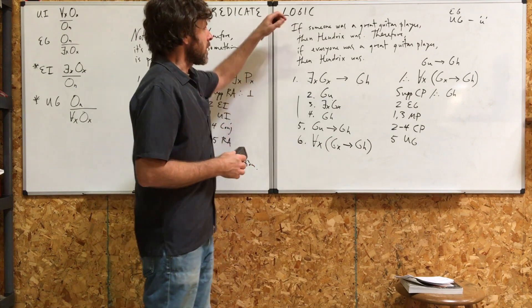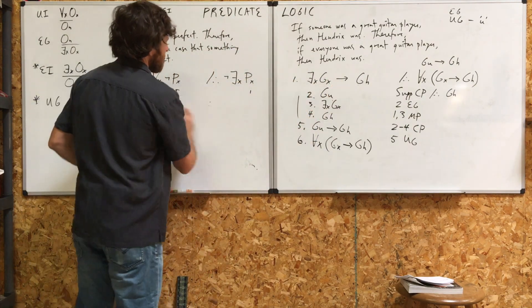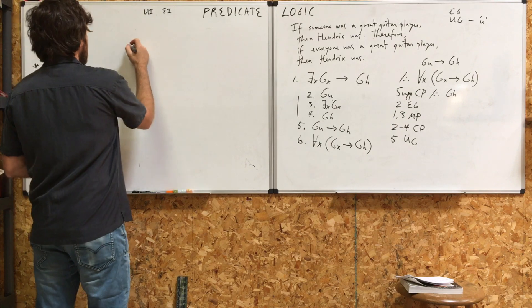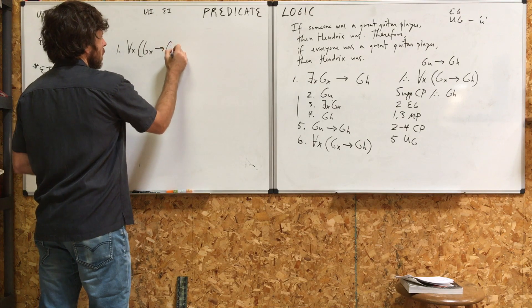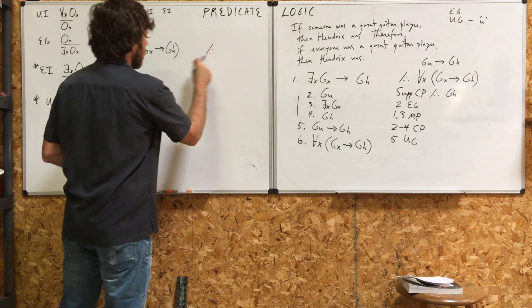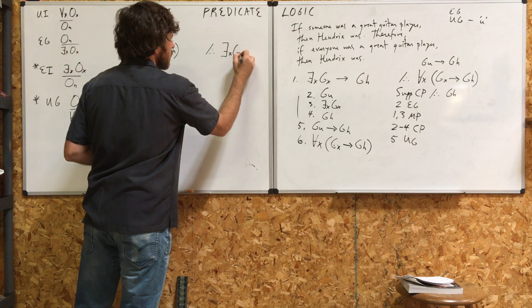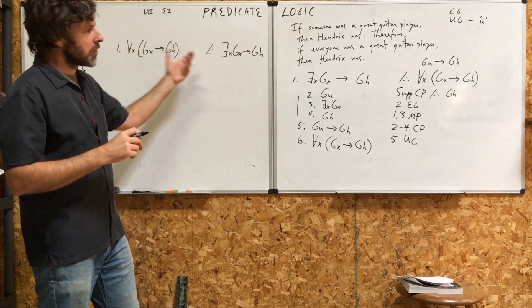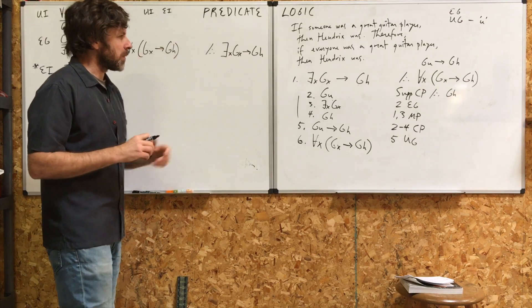Now, what we're going to do is actually show that these two statements are logically equivalent. So, we're going to work backwards. That is, if everyone was a great guitar player, then Hendrix was. That is equivalent to, or it also follows that, if someone was a great guitar player, then Hendrix was. So, this is just the converse or reverse of that argument right there. And that will be sufficient to show that these two statements are logically equivalent.